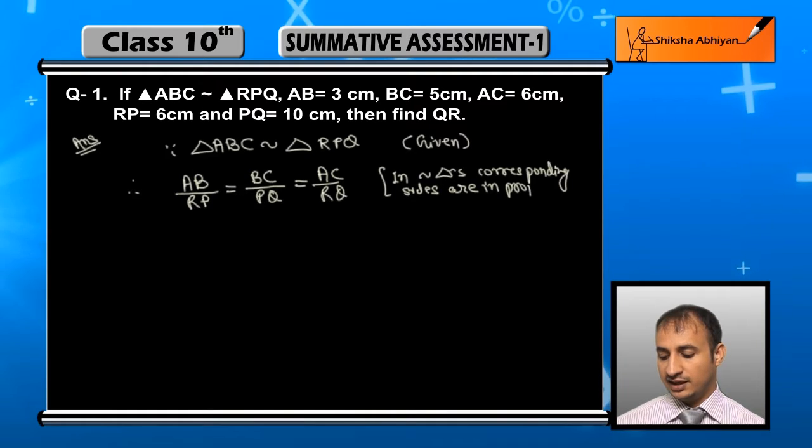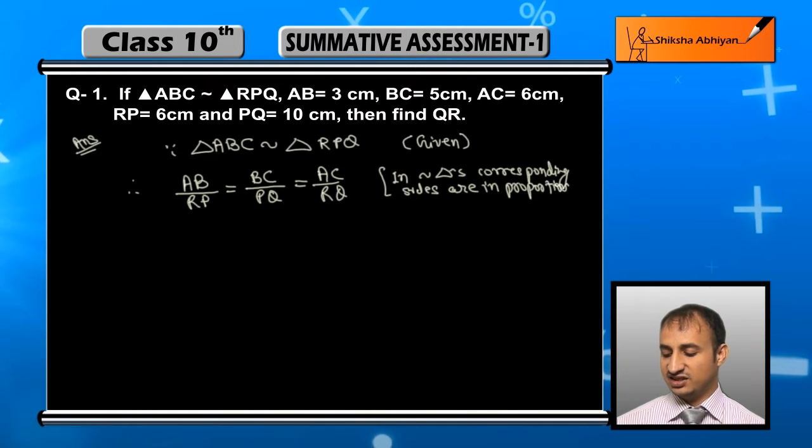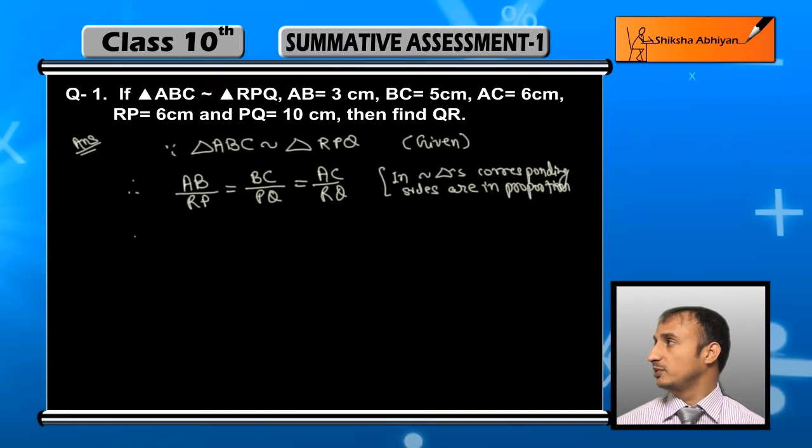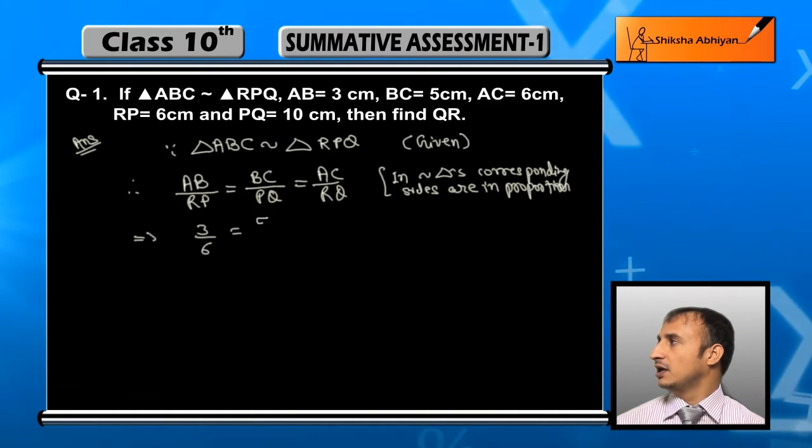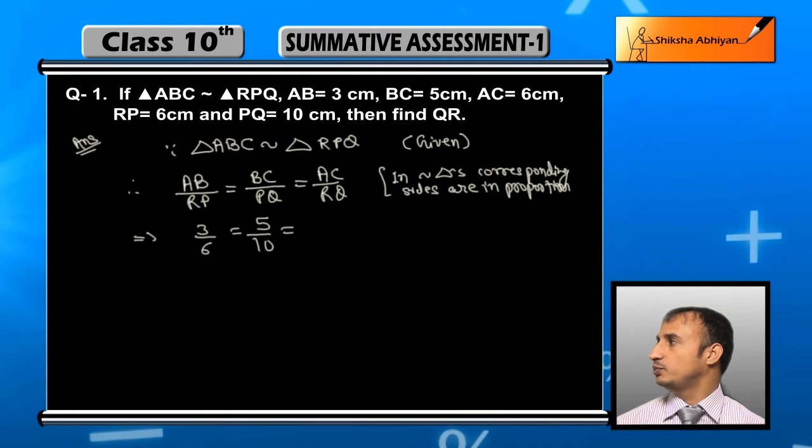अब आपको यहाँ पर क्या है AB की value भी पता है, BC की भी पता है, AC की भी पता है, RP की and PQ की भी पता है। तो यह values आप लिख लीजिए: AB है 3, RP है 6, BC है 5, PQ है 10.